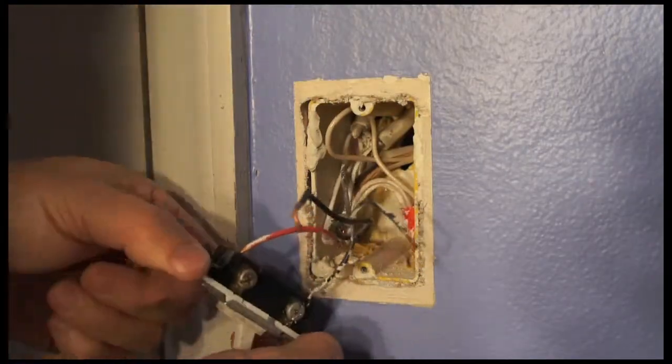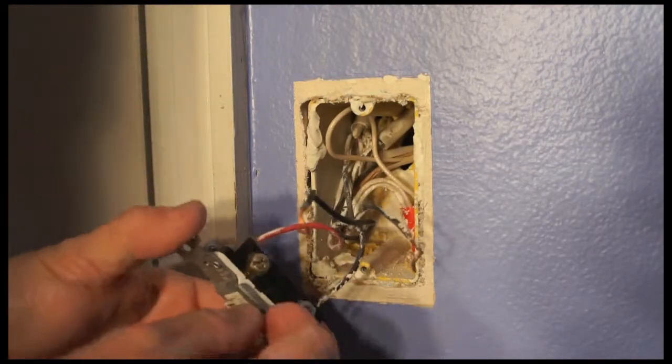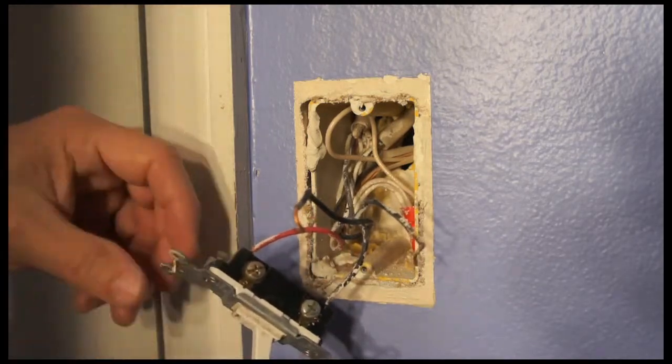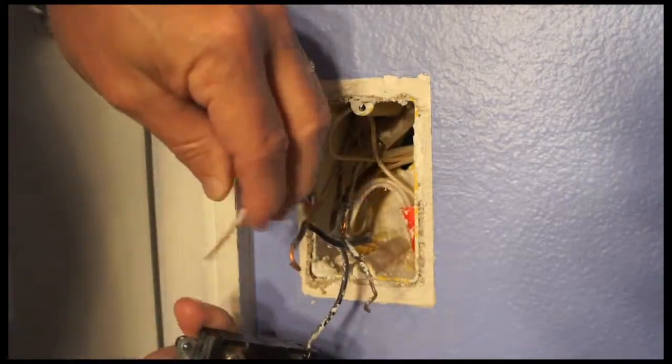Now you notice there's two other wires on here also, and they just tighten the other feeds to this wire, to this light switch. So now I'm going to undo these by a matter of twisting.